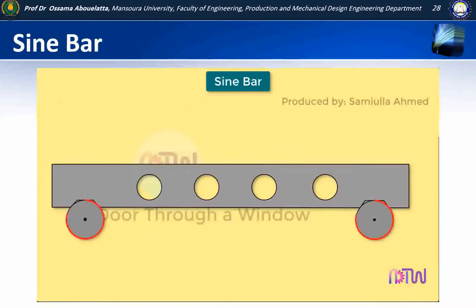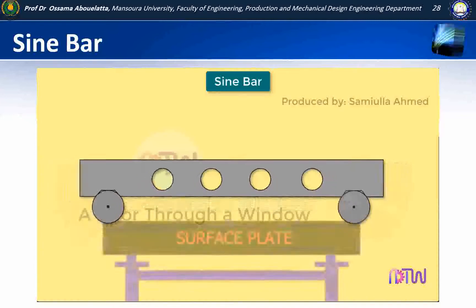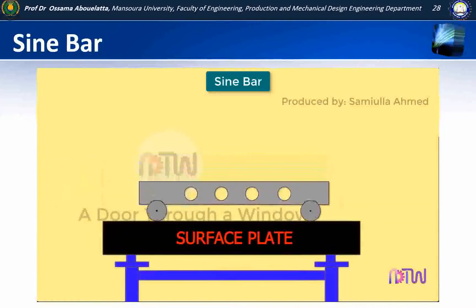The two rollers must be of the same diameter. The various parts of the sine bar are hardened before grinding and lapping. The rollers are fixed so that when the sine bar is placed on a surface plate, the surface of the bar is exactly parallel to the surface plate.